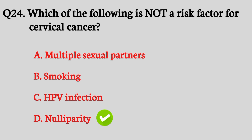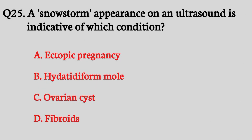Question number twenty-five. A snowstorm appearance on an ultrasound is indicative of which condition? The right answer is option B: Hydatidiform mole.